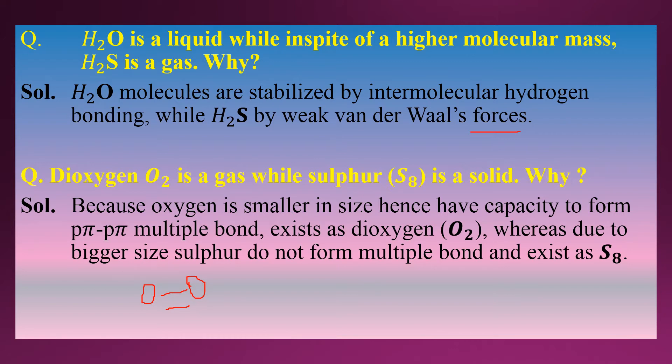Due to the small size of oxygen, it exists in gas form and forms pπ–pπ multiple bonds — a double bond between two oxygen atoms. In the case of sulfur, it exists in solid S8 form. Due to its larger size, sulfur does not have multiple bond forming tendencies.